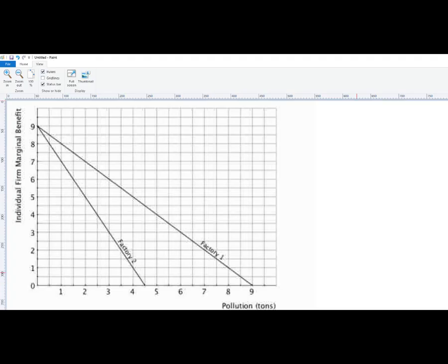All right, in this video, let's do a horizontal summation problem. That's what this kind of thing is called. When you have two demand curves, we're going to add them together at different quantities, or rather, at the price, we're going to add those quantities together to get the total. So it's kind of like the combined demand.